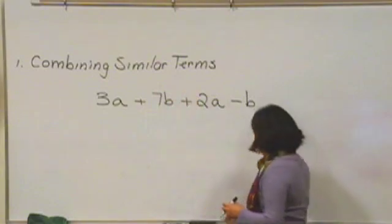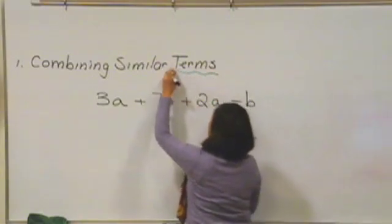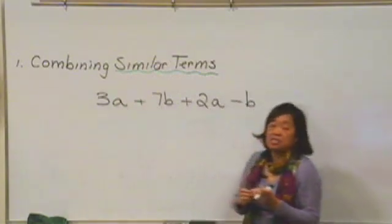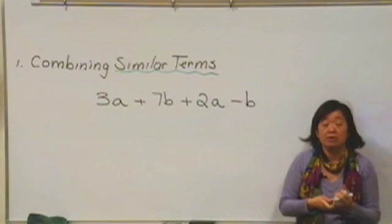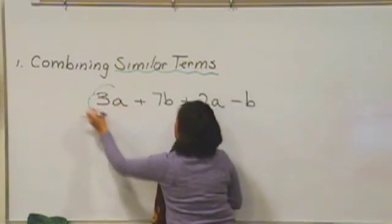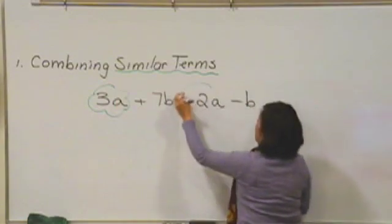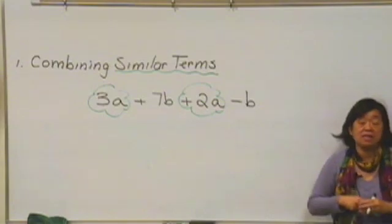And just as a reminder, similar terms, when we see this topic, we're looking at terms or pieces that have exactly the same variable part. So for example, if I look at this expression, 3a and 2a are considered similar terms, and so we can combine them together.